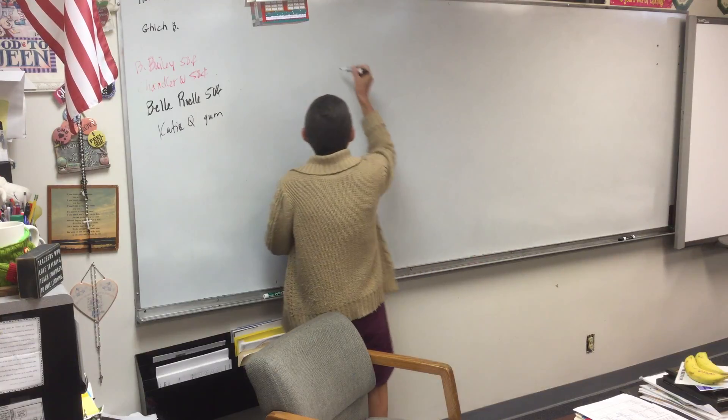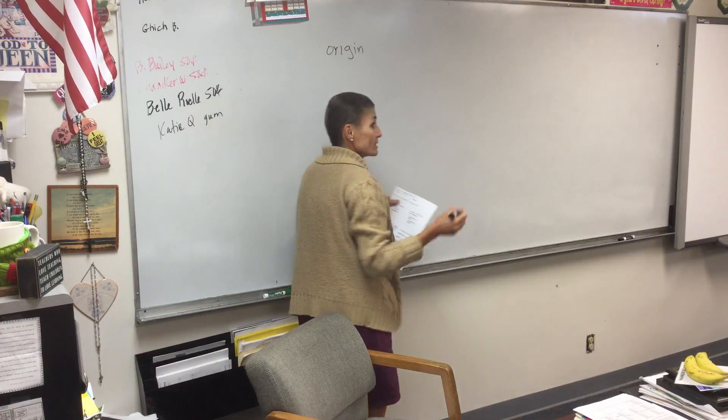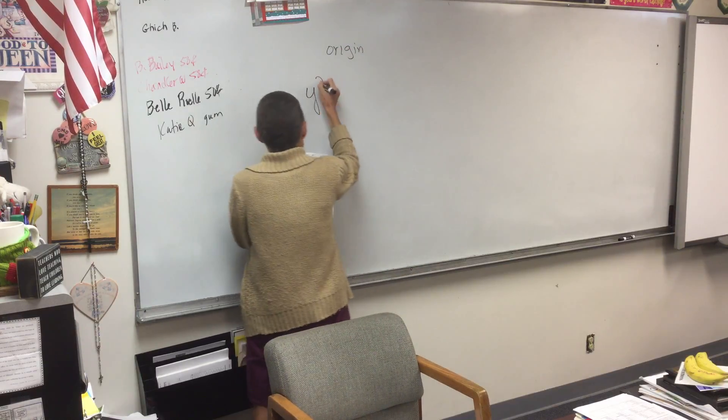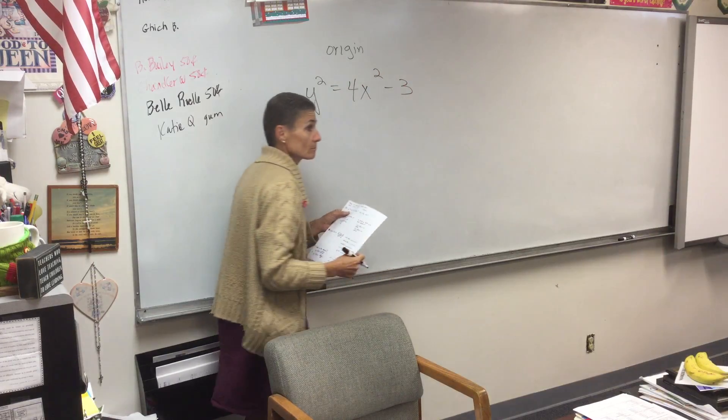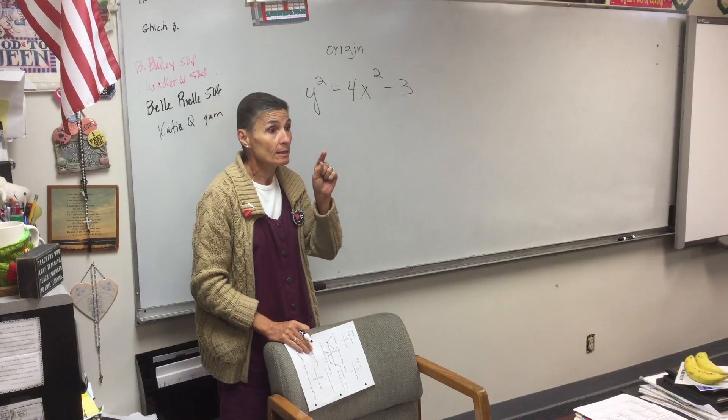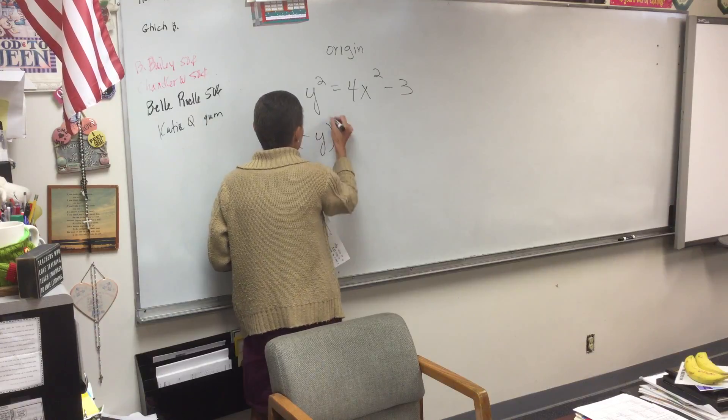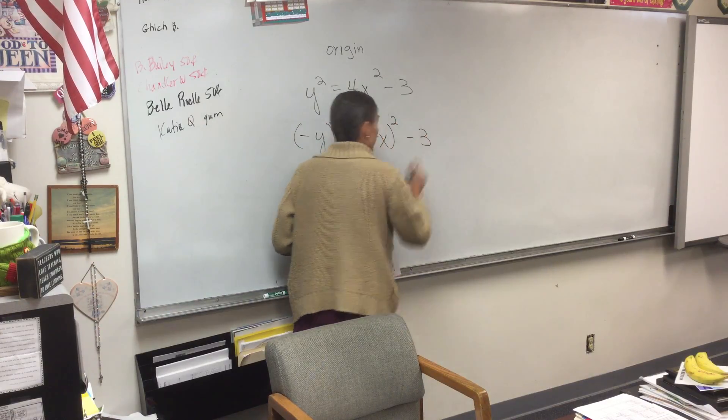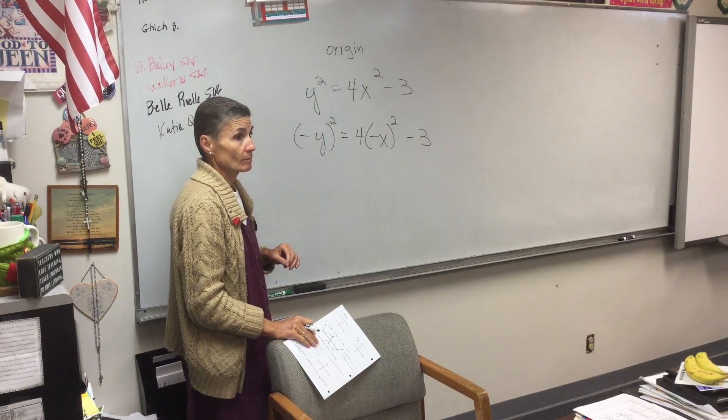For us, we need the test for the origin. That's the only one we care about because the question is about it. Who remembers the test for symmetry about the origin? Switching the signs. Switch signs on both. So we would make this negative y squared, four times negative x squared, minus three. Right?